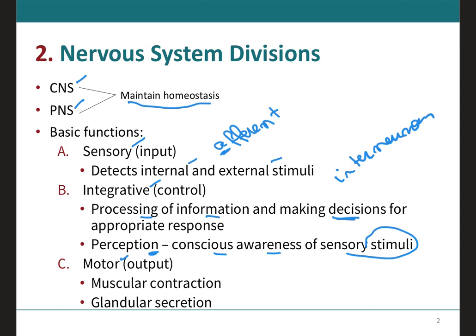Lastly, we have the motor function. Once the sensory information is integrated, the nervous system may elicit an appropriate motor response, such as a muscle contraction or a glandular secretion. The neurons that serve this function are called motor or efferent neurons — with an E. Motor neurons carry information from the brain toward the spinal cord, or out of the brain and spinal cord to the effectors — the muscles and the glands — through the cranial and spinal nerves in the peripheral nervous system.